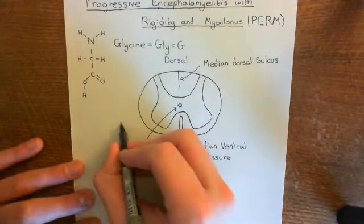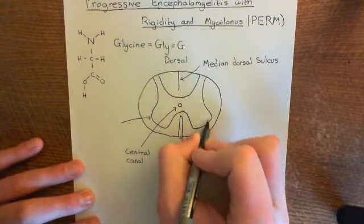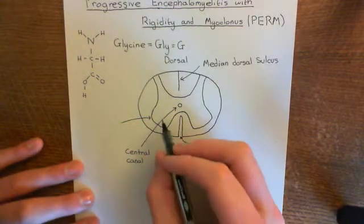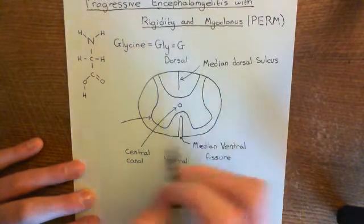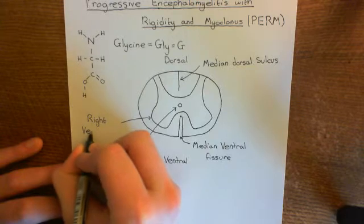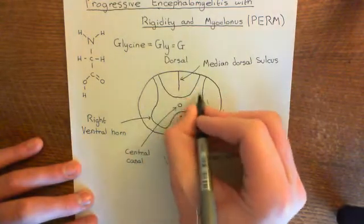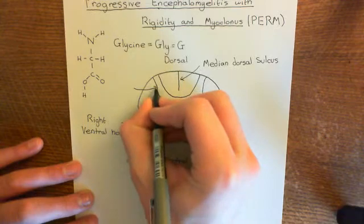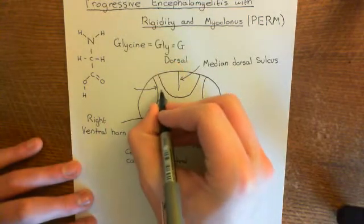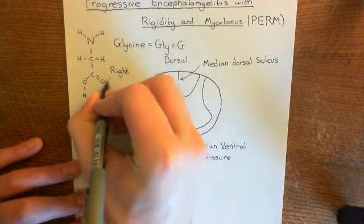The process of grey matter coming forward is known as the ventral horn — you have one on the right side and one on the left. The process at the posterior side is the dorsal horn, or dorsal grey matter horn. You also have two of these: a right dorsal horn and a left dorsal horn.